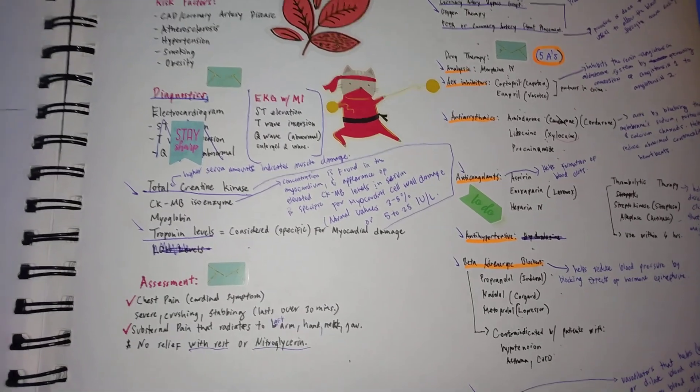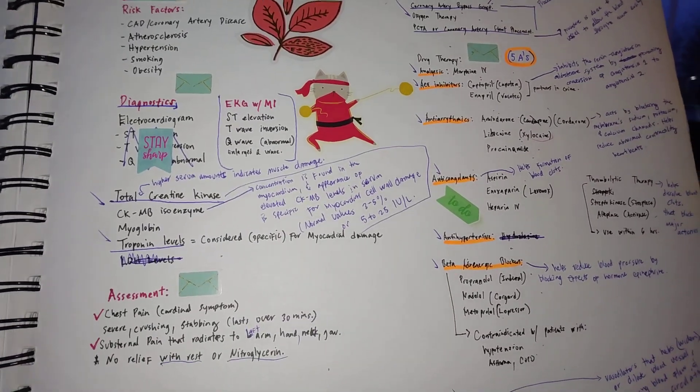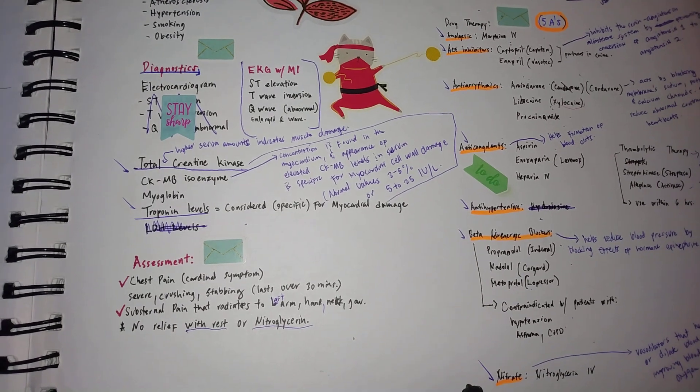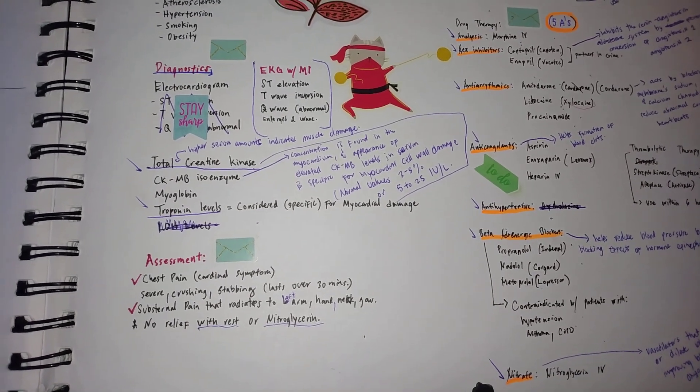Also, we can give the patient some thrombolytic therapy, which can basically help dissolve the blood clots that block the major arteries during an MI. The main drugs would be streptokinase and activase.